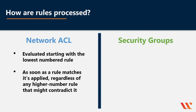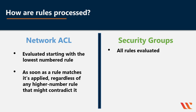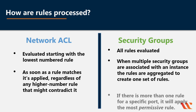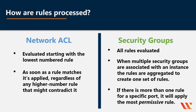Security groups, on the other hand, don't have this kind of numbered approach. With security groups, all the rules are evaluated before deciding whether traffic is allowed. When multiple security groups are associated with an instance, the rules are aggregated to create one set of rules. If there is more than one rule for a specific port, it will apply the most permissive rule.